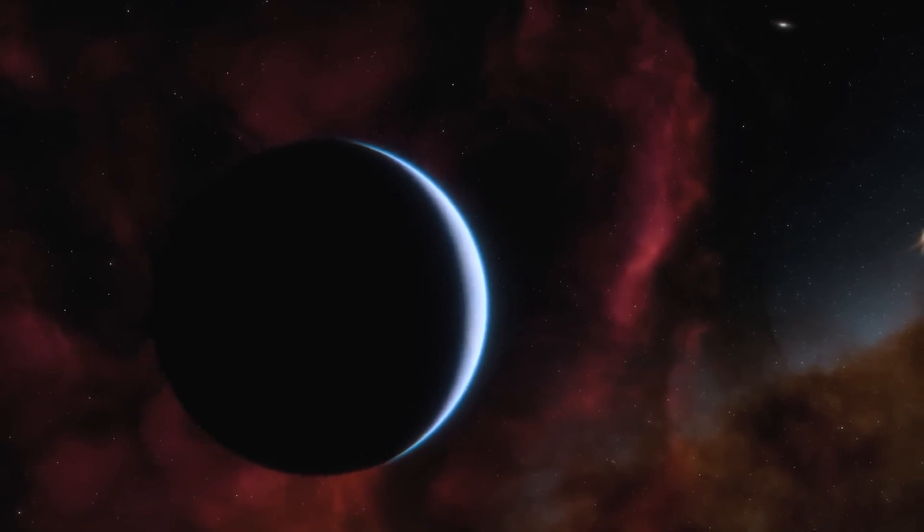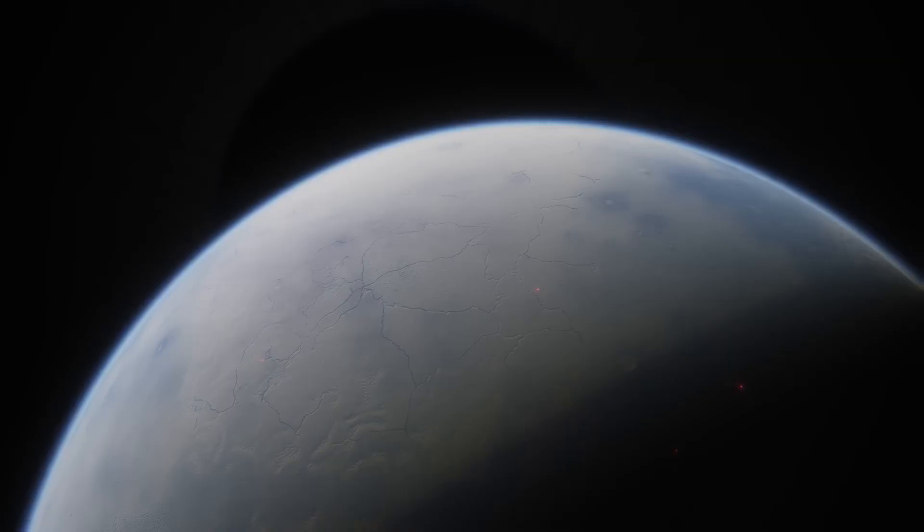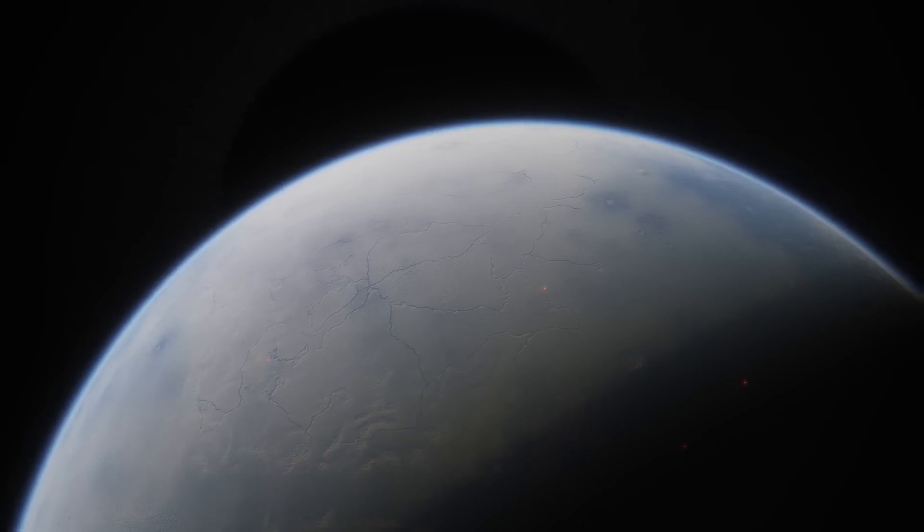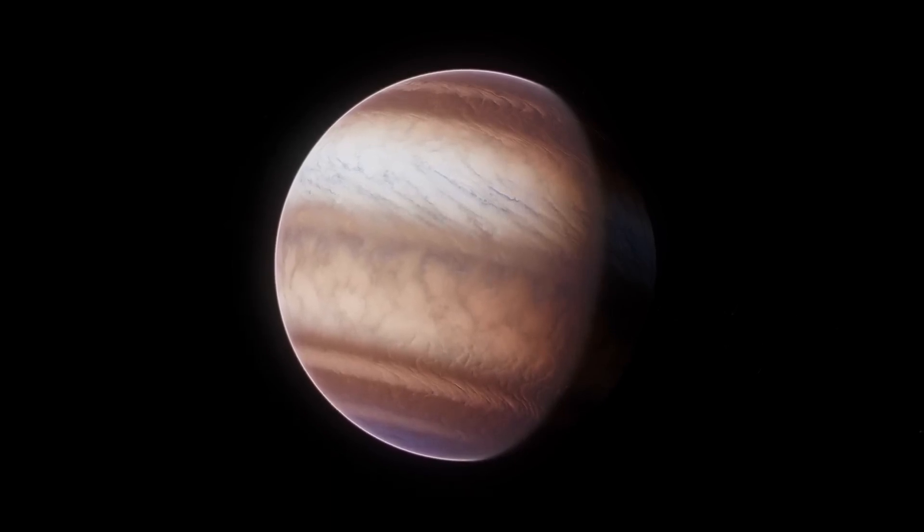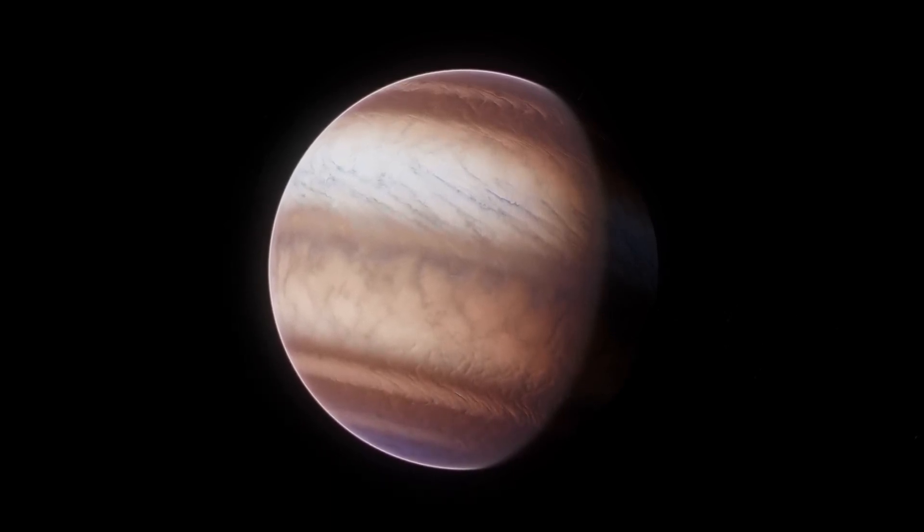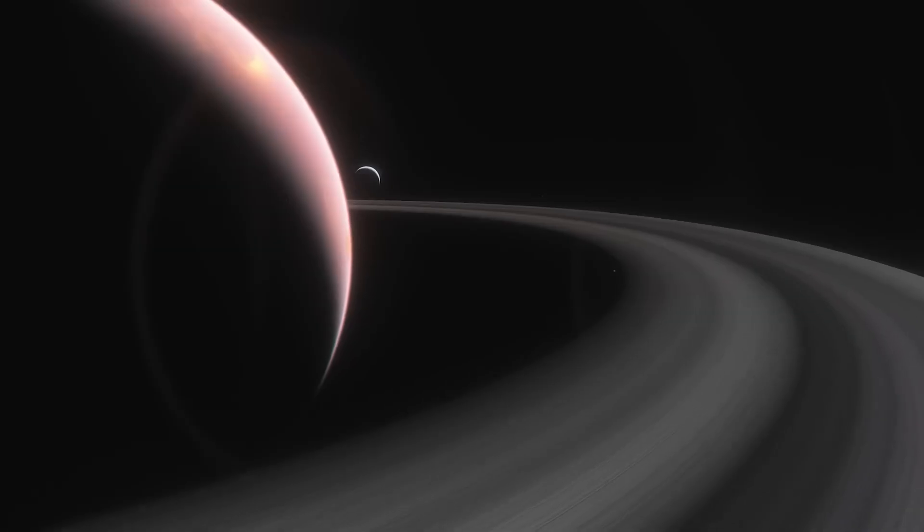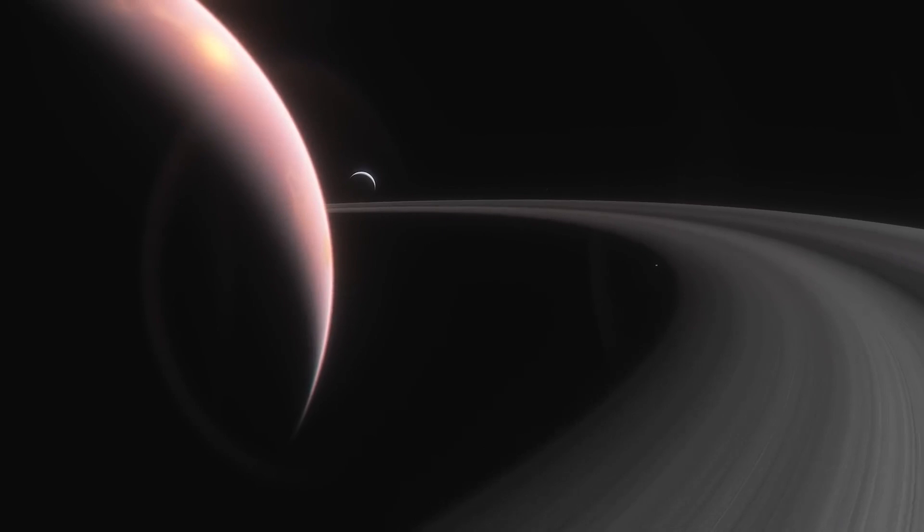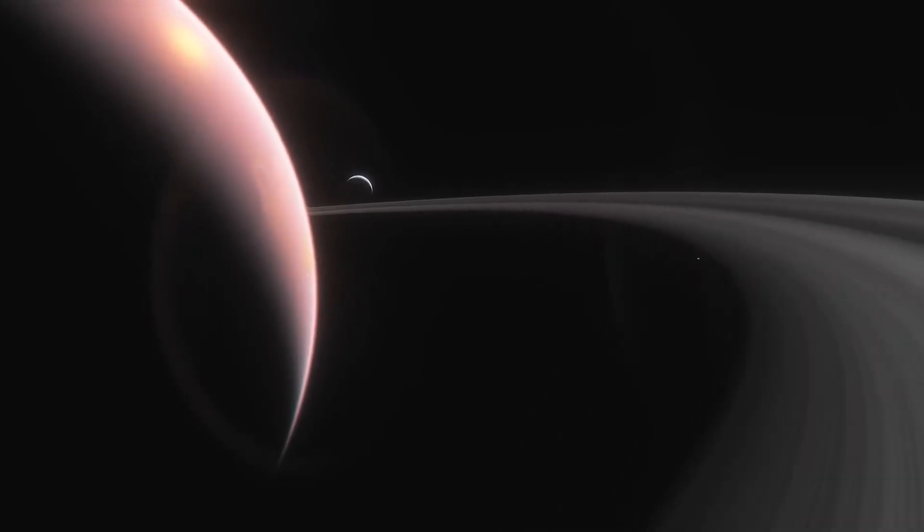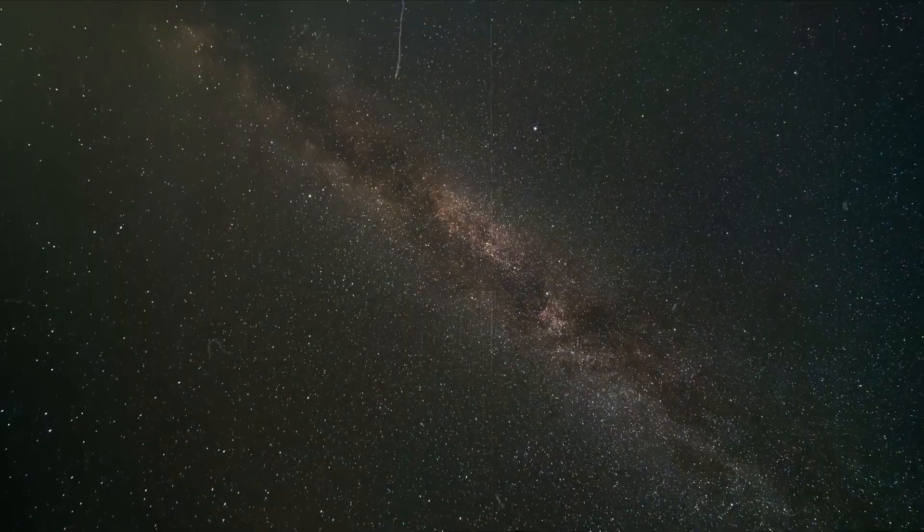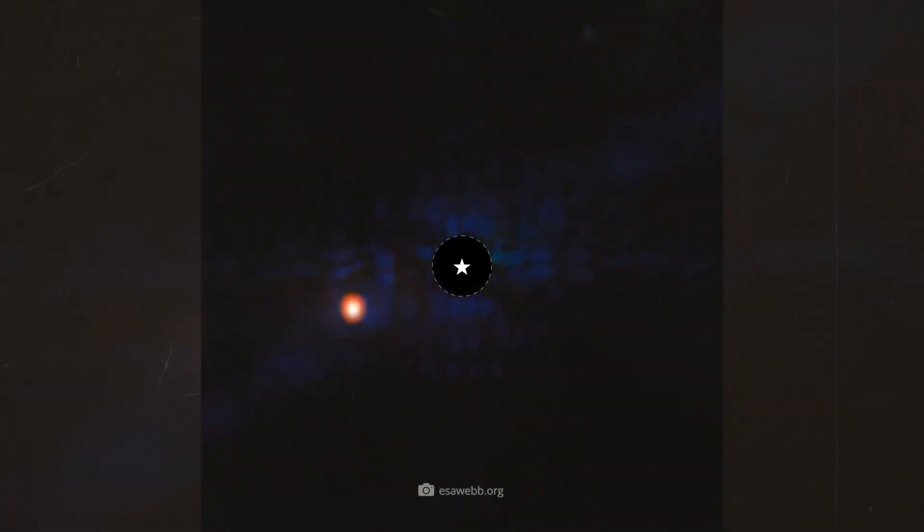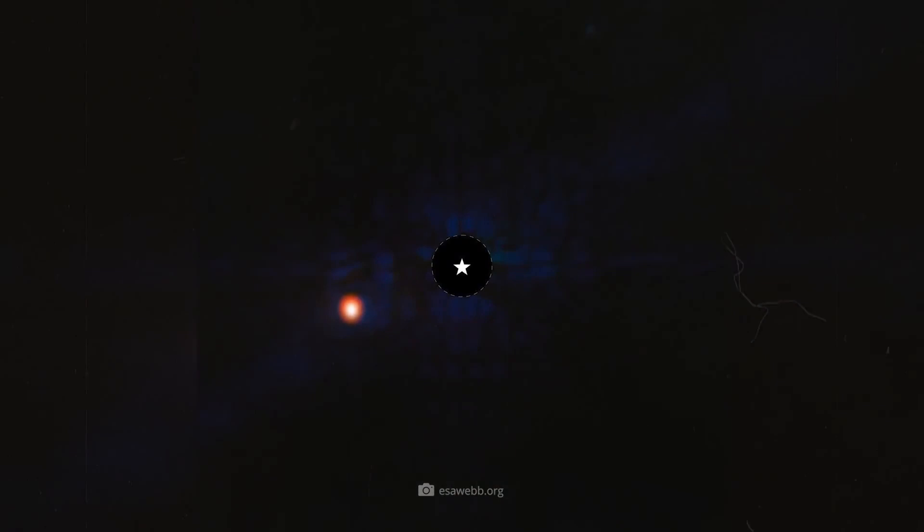There are very few direct images of exoplanets to date, and most of those show young, hot, gas giants visible in the infrared as relatively bright points of light. Moreover, most of the roughly 25 exoplanets captured directly are younger than 500 million years, with the majority being even younger than 100 million years. Epsilon Indy Ab, by contrast, is about 3.5 billion years old, offering researchers a chance to test models of planetary evolution and clarify questions about the late phases of exoplanets.